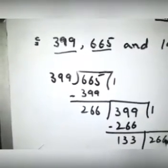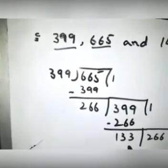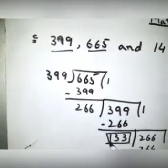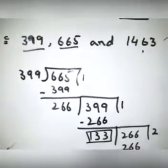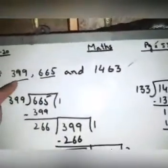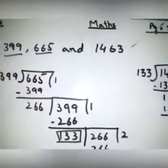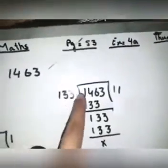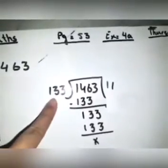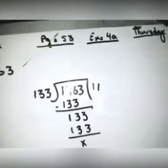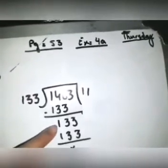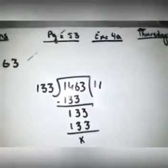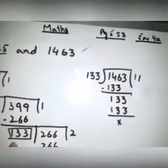266 times 1 is 266. Subtract this and the answer will be 133. Now 266 is greater than 133, so 266 comes here and we divide 266 by 133. 133 times 2 is 266 — finished. The HCF of the first two values is 133. Now divide the third value 1463 by 133. 133 times 11 is 1463 — the division is complete, so the HCF is 133.